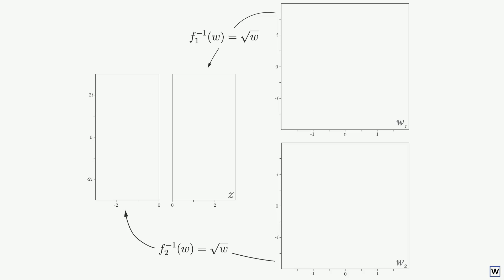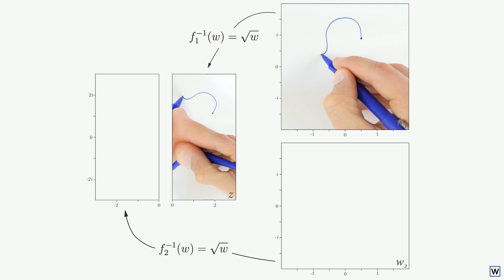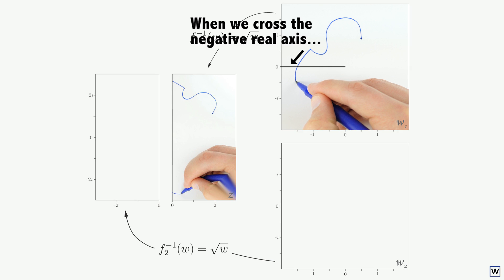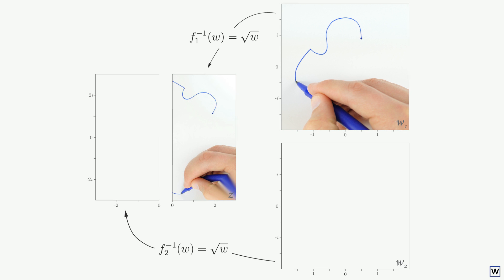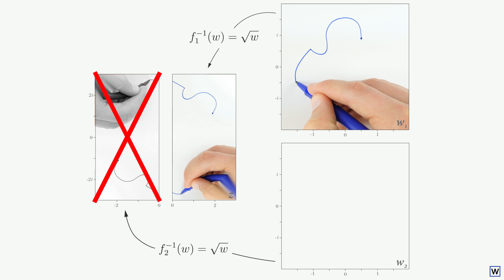Let's draw a path again, but this time just on our first w-plane. Things look just fine until we cross the negative real axis, and our path on the z-plane suddenly jumps. This of course is what must happen. We've required points from our first w-plane to only map to the right side of our z-plane. Almost every point on w has two possible solutions on z, and with our first branch, we've decided to always pick the one on the right. So our path now jumps around the z-plane.